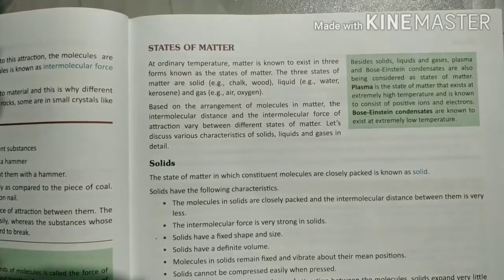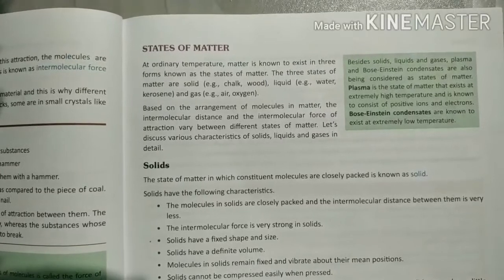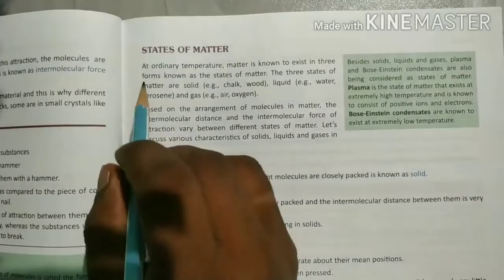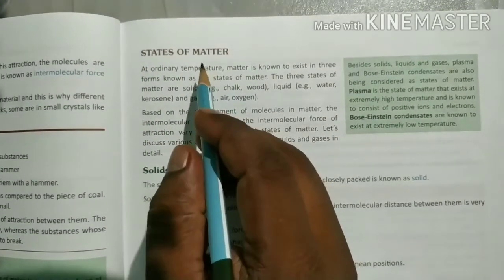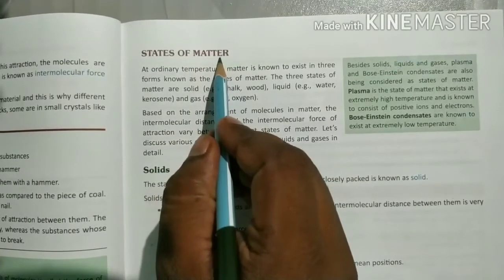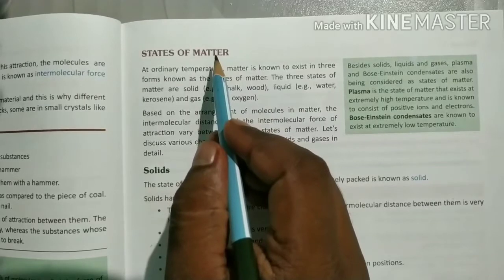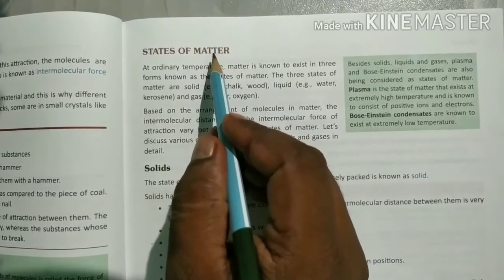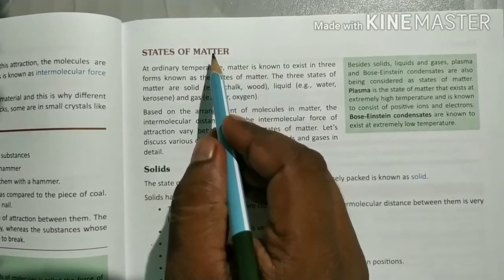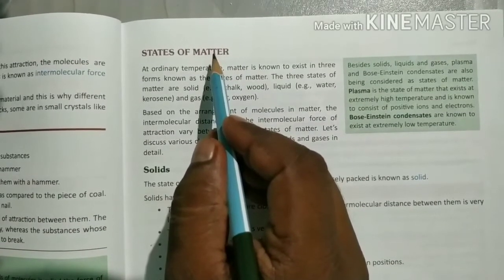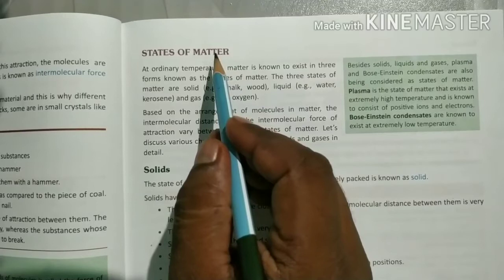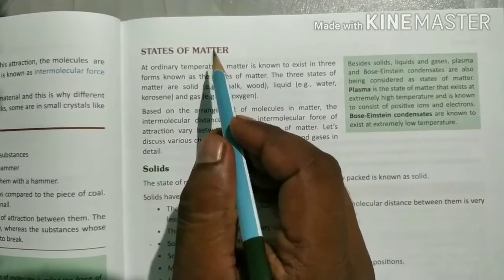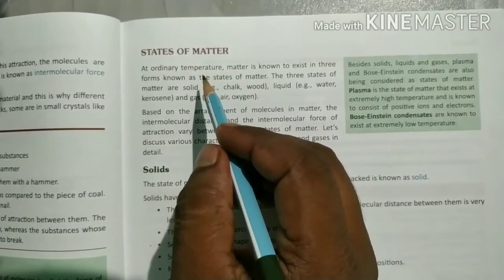Good afternoon students. This is your physics class and in this class we will cover a new topic which is states of matter. We have already learned about matter, atoms and molecules. Matter is anything which occupies space and has mass. The atom is the smallest particle of matter. Here we discuss the states of matter.